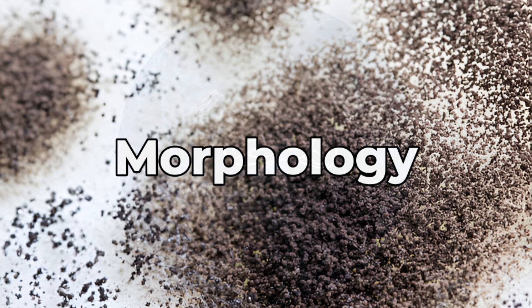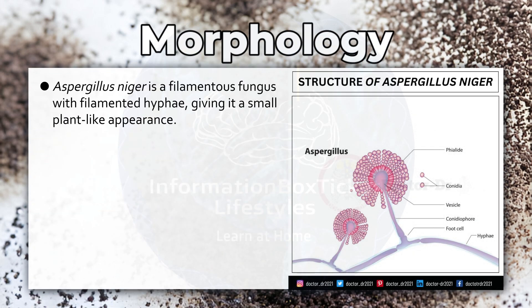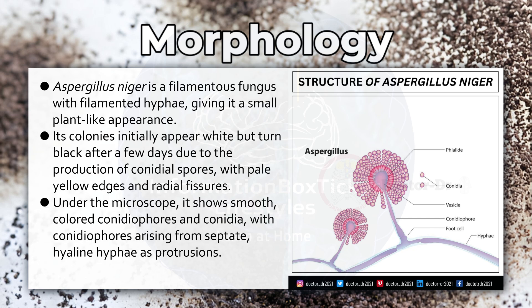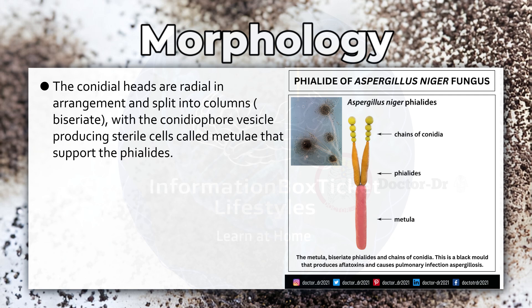Aspergillus niger is a filamentous fungus with filamentous hyphae, giving it a small plant-like appearance. Its colonies initially appear white but turn black after a few days due to the production of conidial spores, with pale yellow edges and radial fissures. Under the microscope, it shows smooth colored conidiophores and conidia, with conidiophores arising from septate hyaline hyphae as protrusions. The conidial heads are radial in arrangement and split into columns by seriation, with the conidiophore vesicle producing sterile cells called metulae that support the phialides.